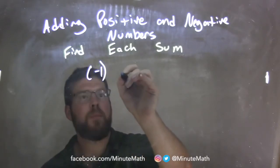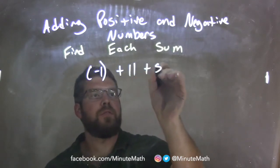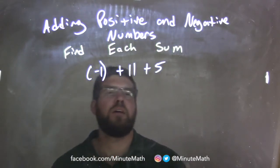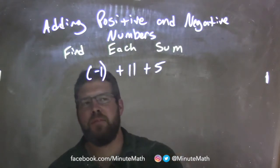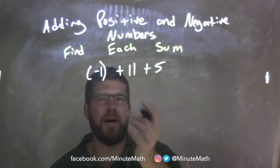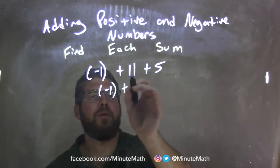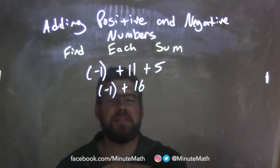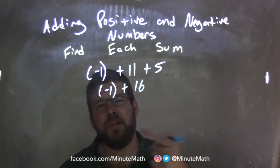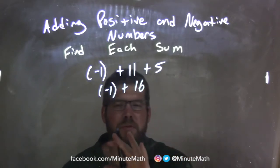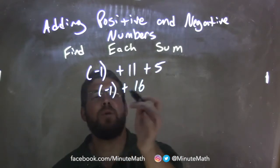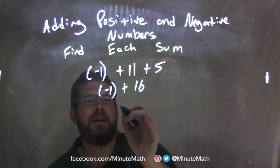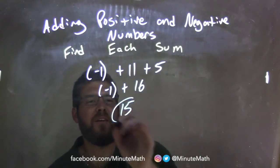Negative 1 plus 11 plus 5. I'm going to deal with 11 plus 5 first since we have all additions — it really doesn't matter. I bring down that negative 1 and deal with 11 plus 5, which is 16. Now we have negative 1 plus 16. Negative 1 is one unit to the left of 16, and that comes out to just be 15.